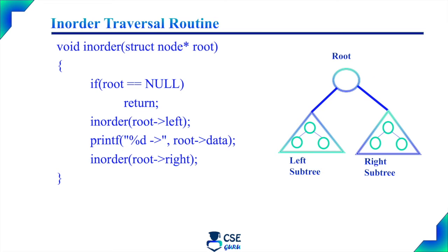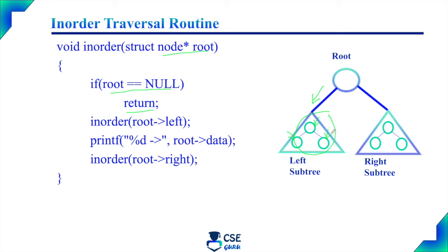Inorder traversal routine. In this function, the root node is passed as an input. First, we have to check whether the root node is null. If the root node is null, the tree is an empty tree, so no need to visit any nodes — it will simply return. Otherwise, move to the left subtree and visit the nodes present in the left subtree as per inorder traversal: left child first, then root node, then right child.